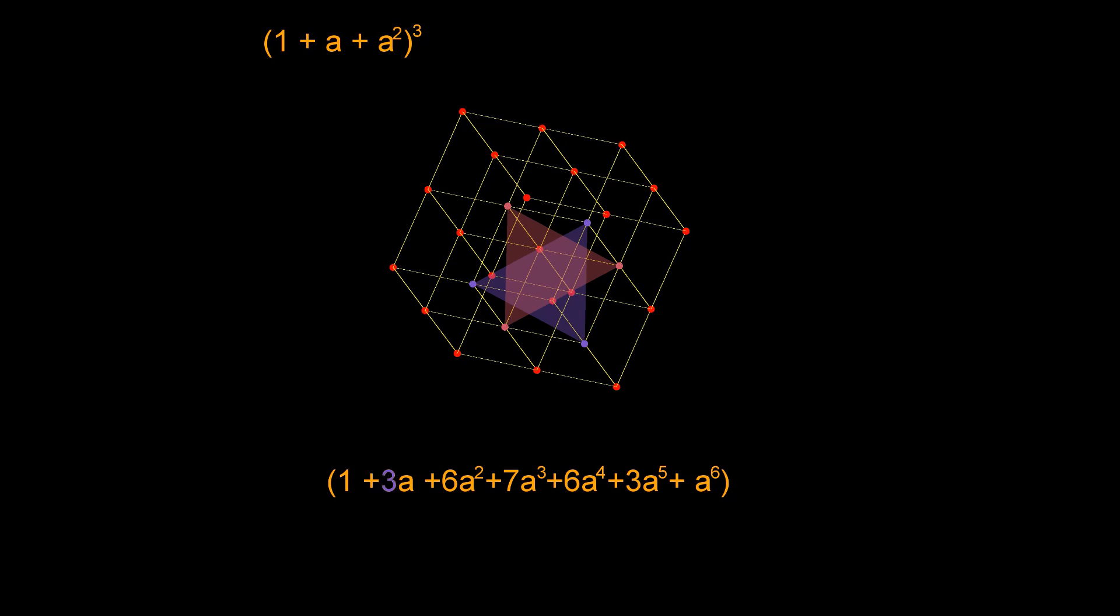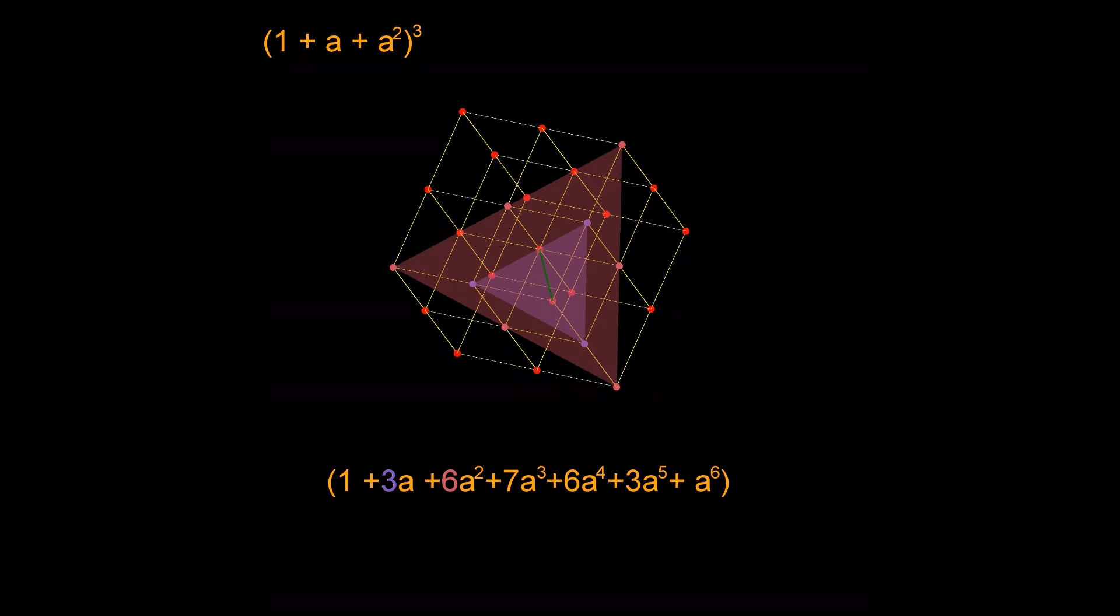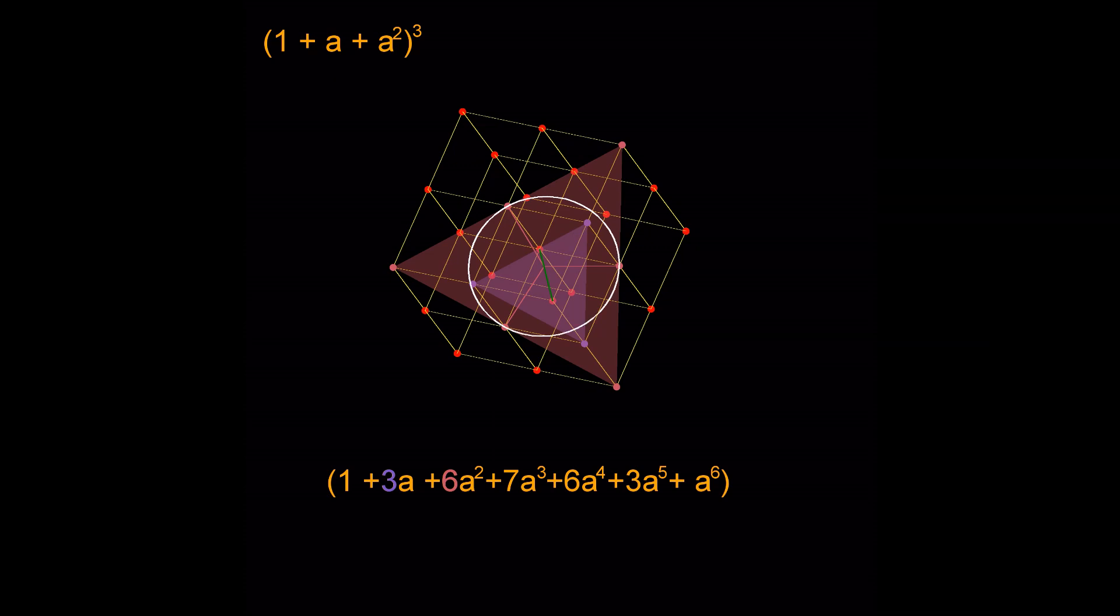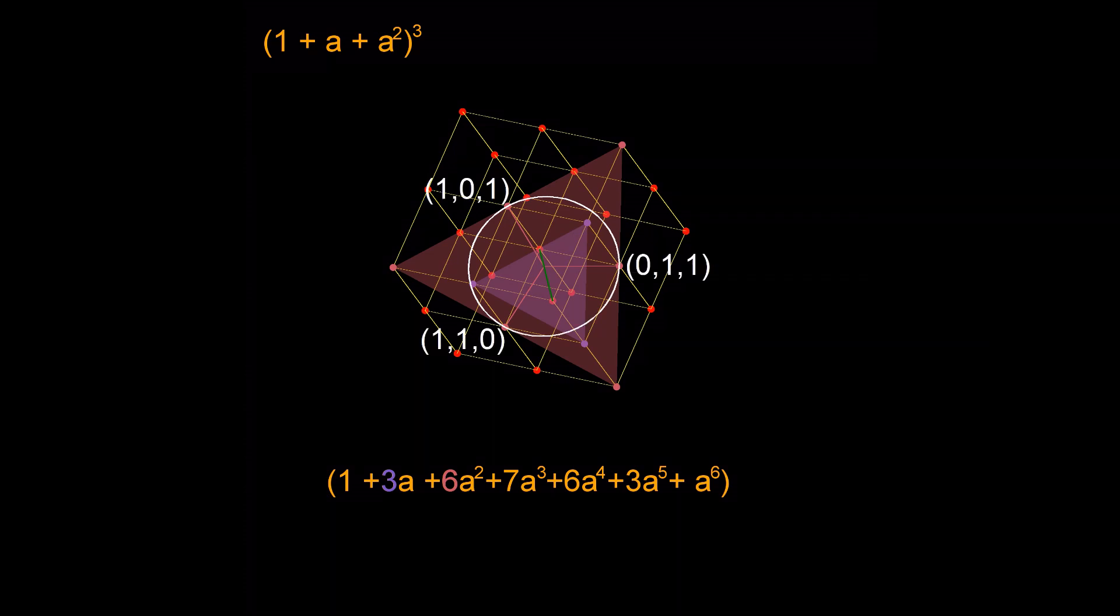Note that the coefficient of a is still 3 but that of a square has increased to 6 and that's because the second plane has room to expand within our cube. Now let's bring back our body diagonal and notice that three of our points are equidistant from it and if you look at their coordinates, do you notice anything? They are permutations of each other.